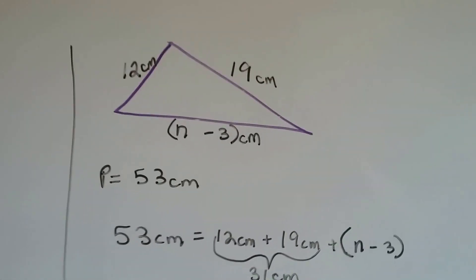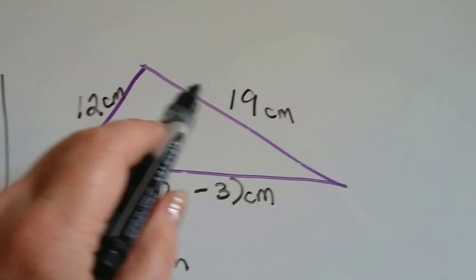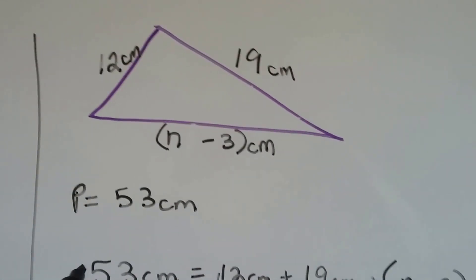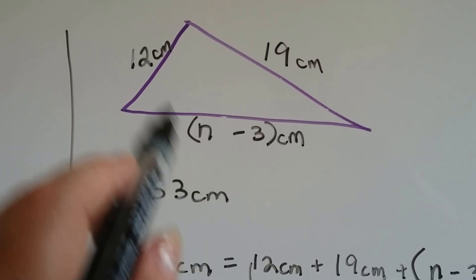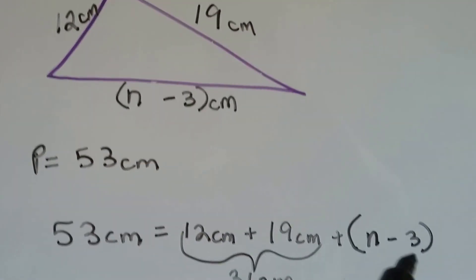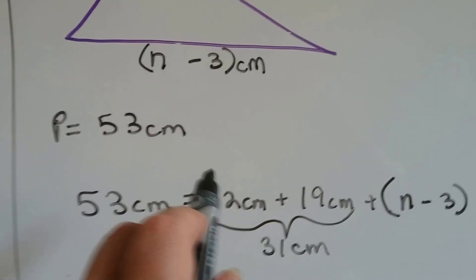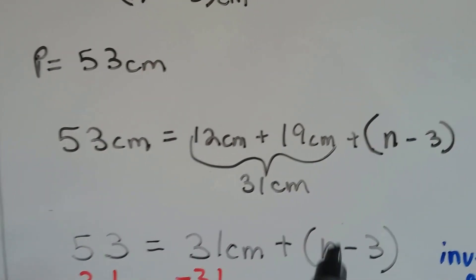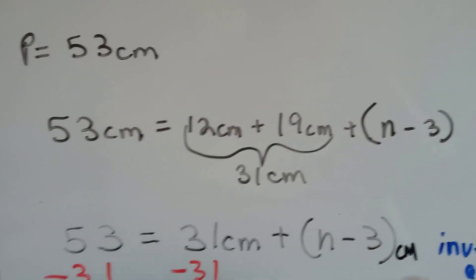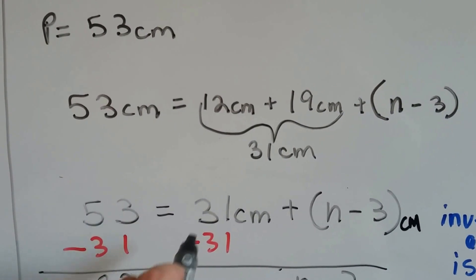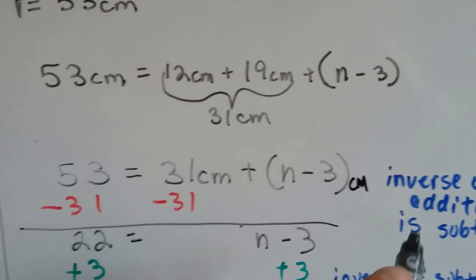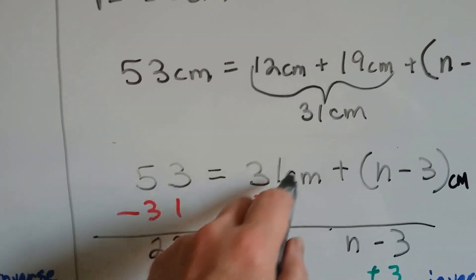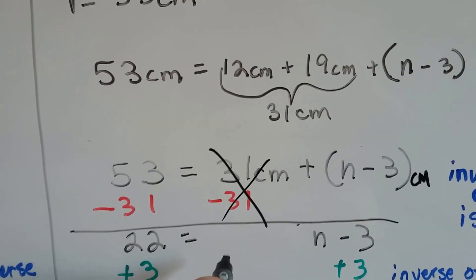Let's try one last one with this triangle. We know that one side is 12 centimeters, another side is 19 centimeters, and the third side is n minus 3 centimeters. If the entire perimeter is 53 centimeters, we write: 53 centimeters is equal to 12 plus 19 plus the quantity n minus 3. We add the known sides together to get 31 centimeters. Because this is a positive 31, we subtract 31 from each side: 53 minus 31 is 22. The plus 31 and minus 31 made zero pairs, so they're gone.